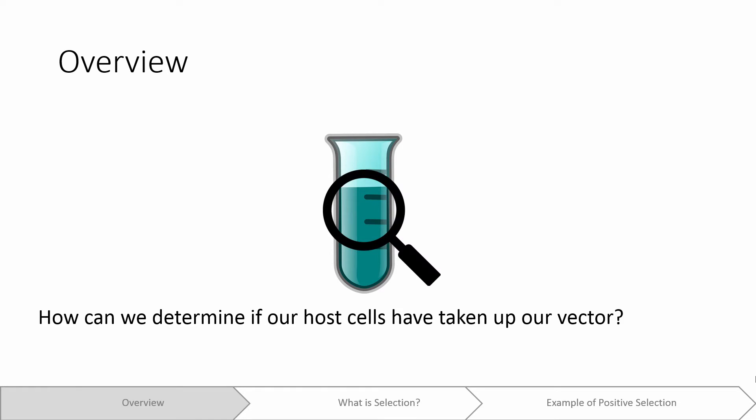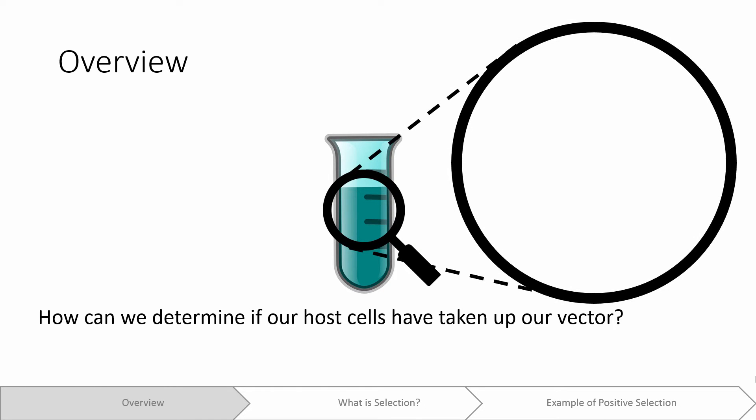If I were able to look at the contents of my host cells, I would see that some of my host cells took up the plasmid while others did not. But how can we tell?